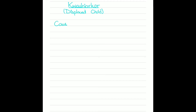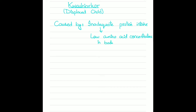What are its causes? It's mainly caused by inadequate protein intake resulting in a low concentration of amino acids. These amino acids are important for muscle building, for some proteins like the plasma proteins inside the blood, and many other processes — for example, for insulin, which is a protein hormone. So we need amino acids for a lot of things in the body.